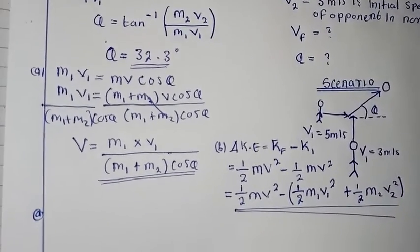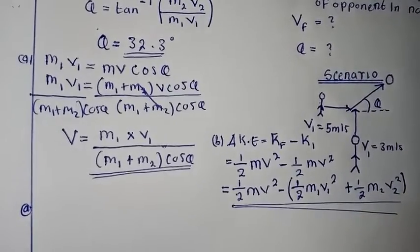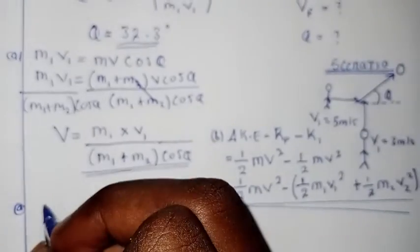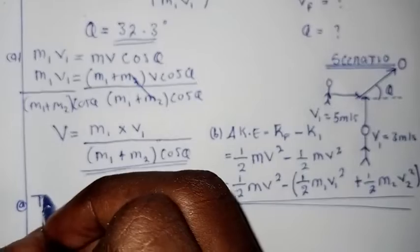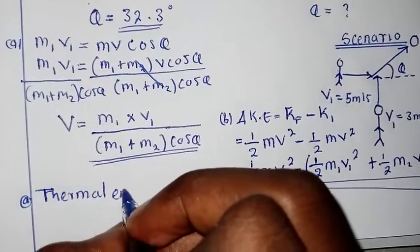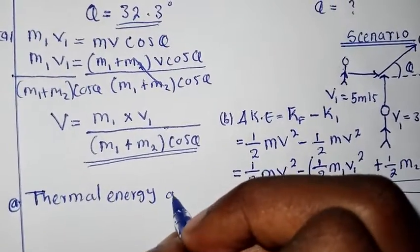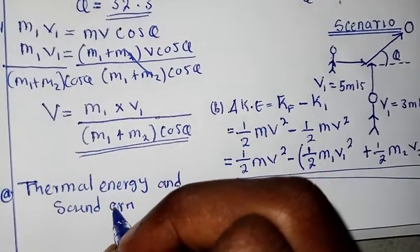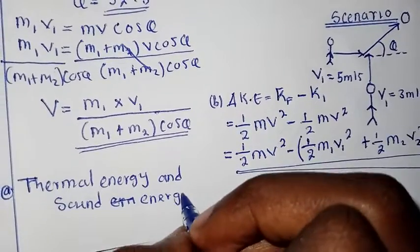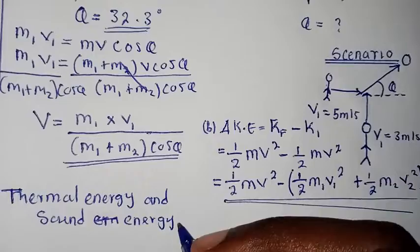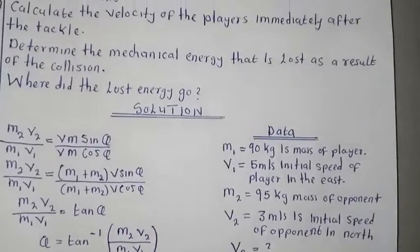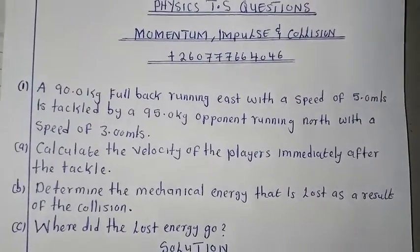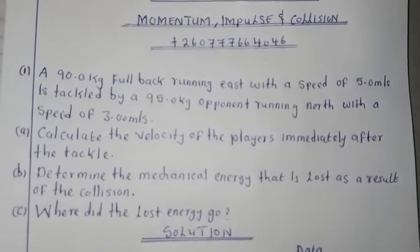The third question asks where the lost energy went. Remember from my last tutorial: when there is a collision, kinetic energy is not conserved — some of it is lost. That lost energy is converted into thermal energy and sound energy. If someone hits you, you feel heat and hear sound — people shout or cry because of the pain. So this is how you answer these questions. Make sure you understand the concepts and the scenario. Different questions will be posted this week, so make sure you follow up. Thank you so much.